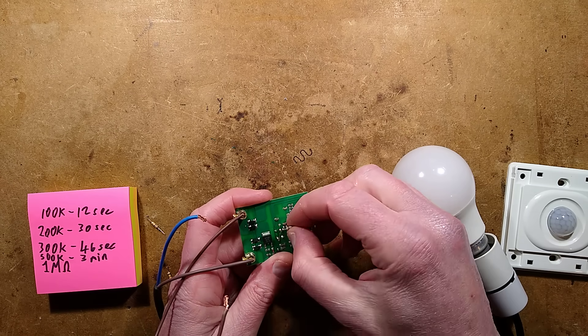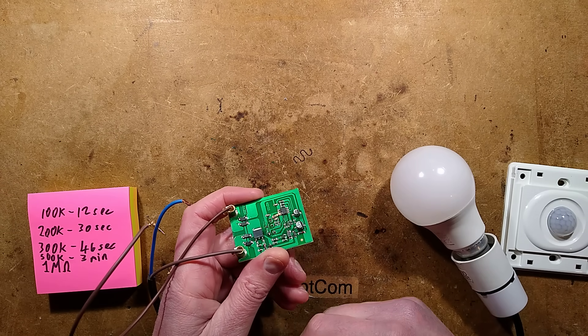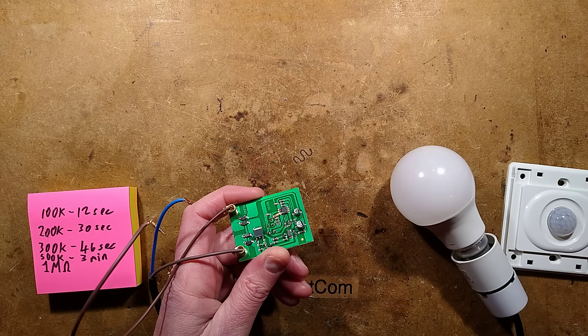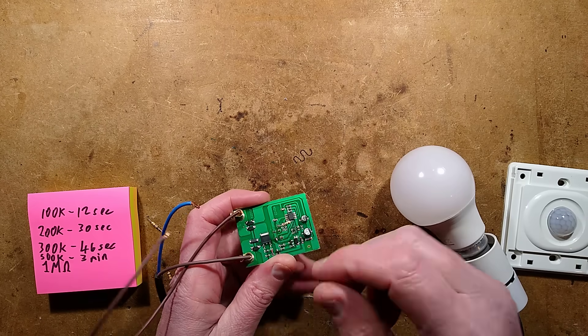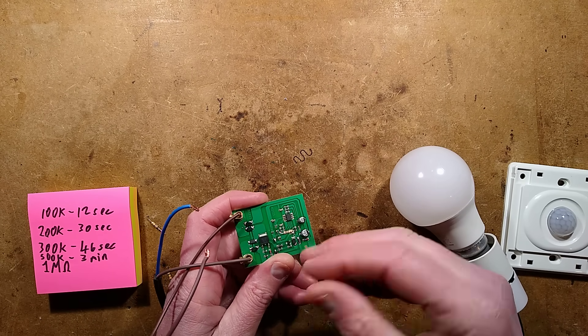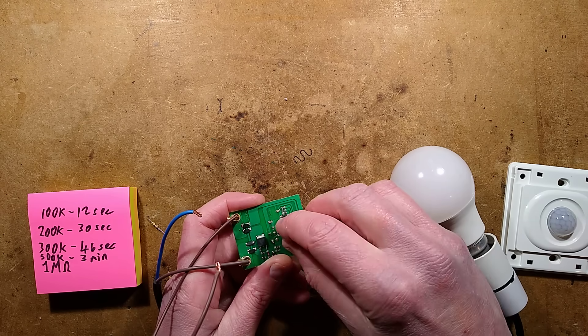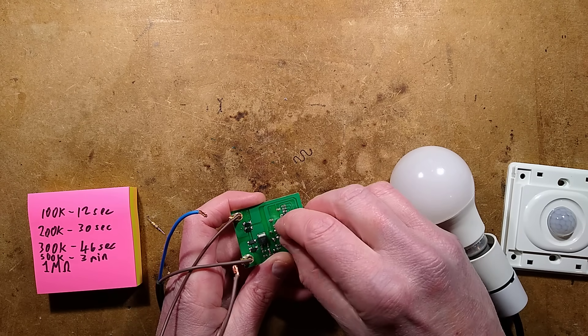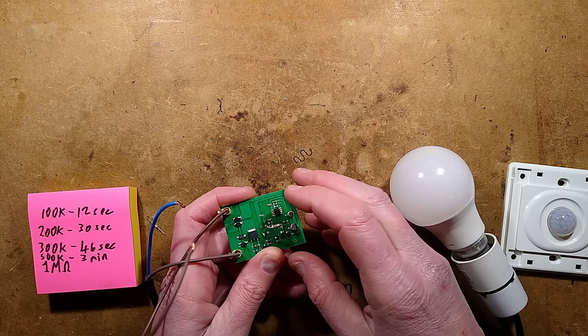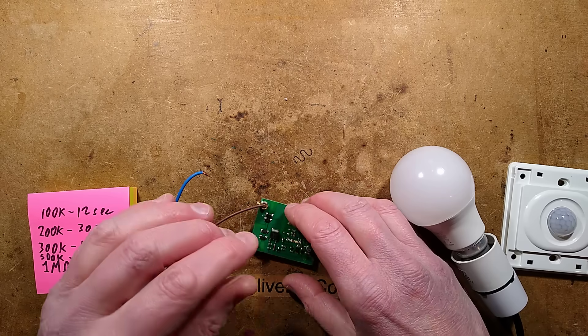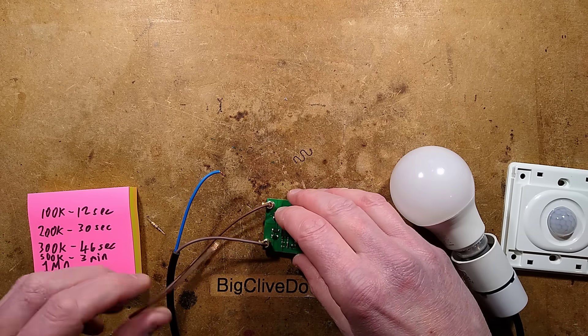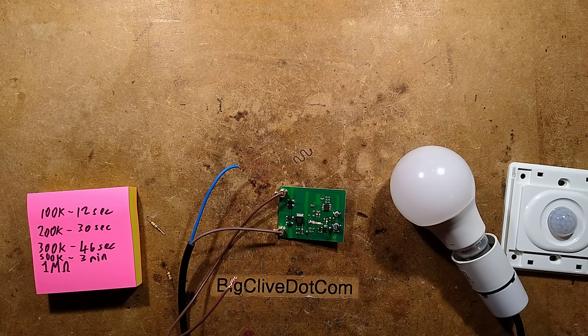Then I put a 1 mega ohm resistor across and tested it and then gave up after most of an hour. And then I put 100k resistor across, it was 12 seconds. 200k it was 30 seconds. 300k, 46 seconds. 500k, 3 minutes. 1 mega ohm, I gave up after 40 minutes. I really don't know. I do notice that the data...